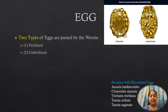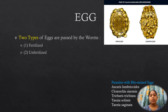The fertilized eggs are laid by females inseminated by males through mating. They are embryonated and develop into infective eggs. The unfertilized eggs are laid by uninseminated females; they are non-embryonated and non-infective. Eggs produced by Ascaris lumbricoides are bile-stained eggs.